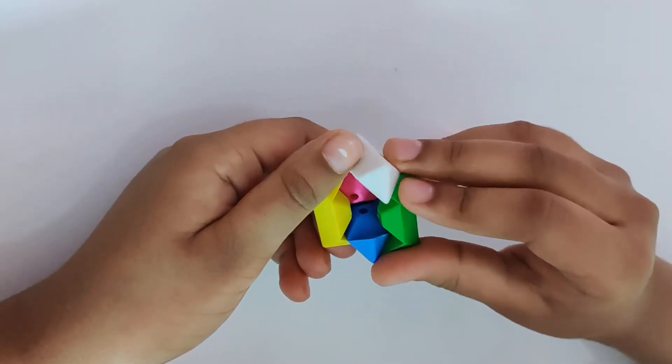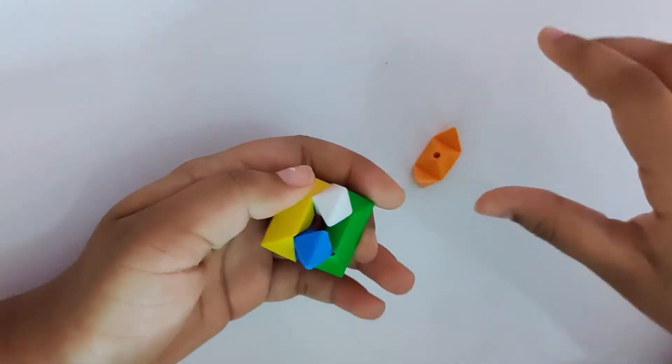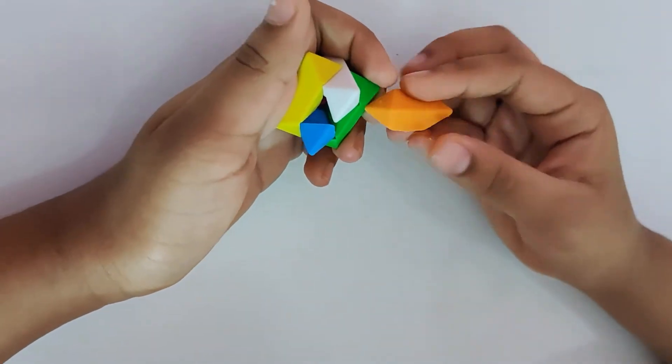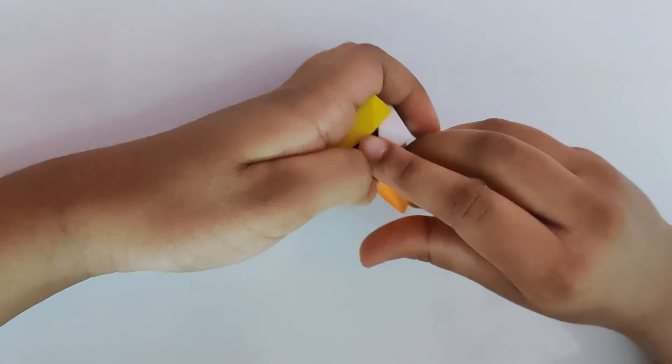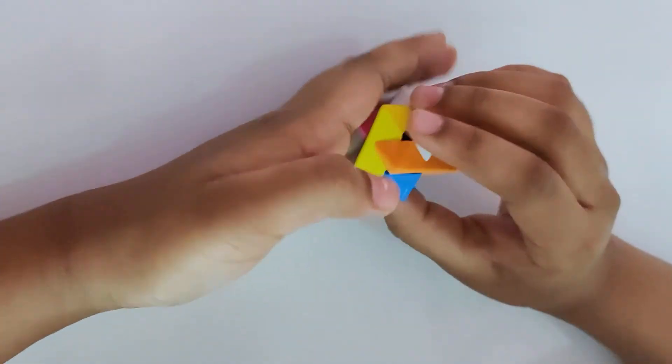Turn around and do the same thing with the other piece like this. Now this piece you have to slide into this area like this.